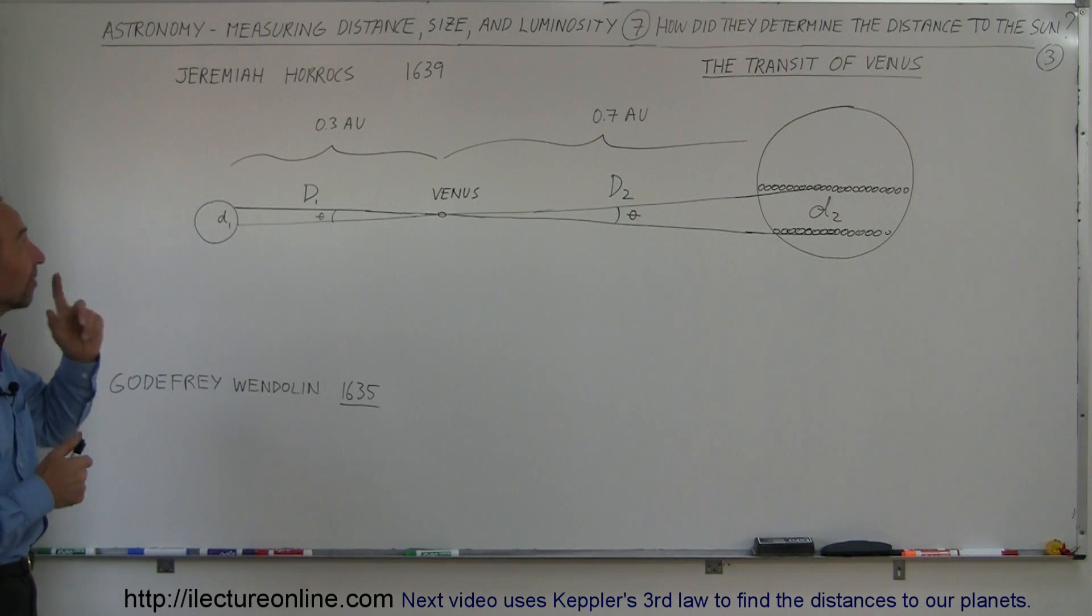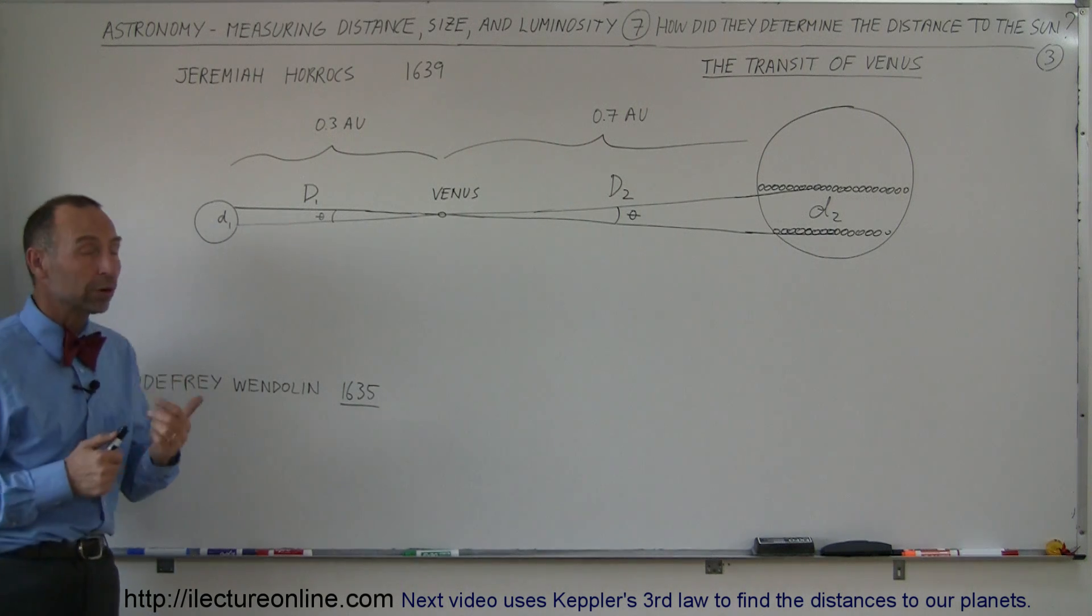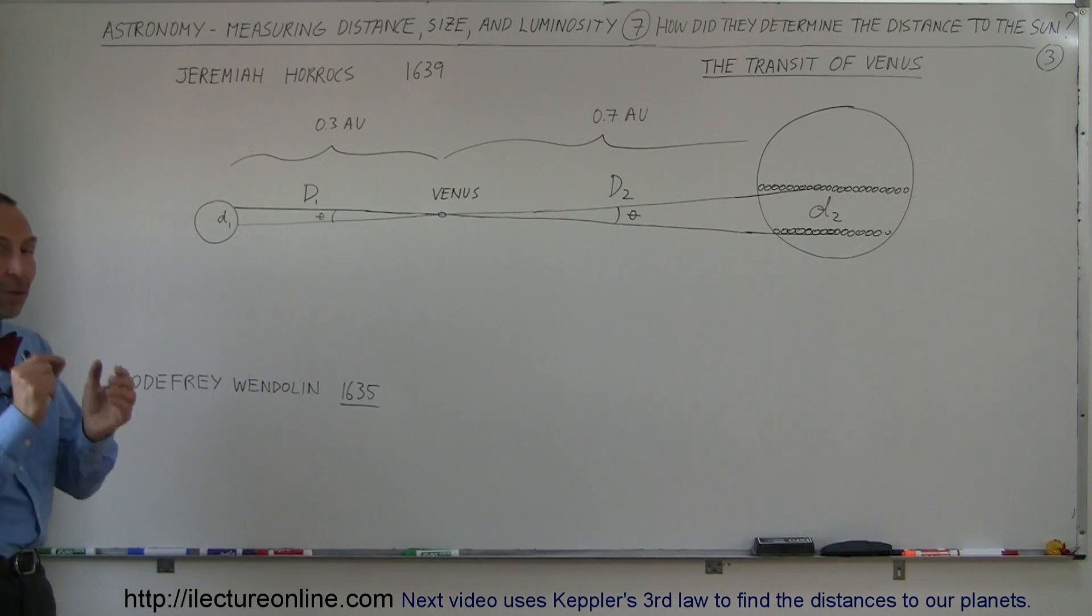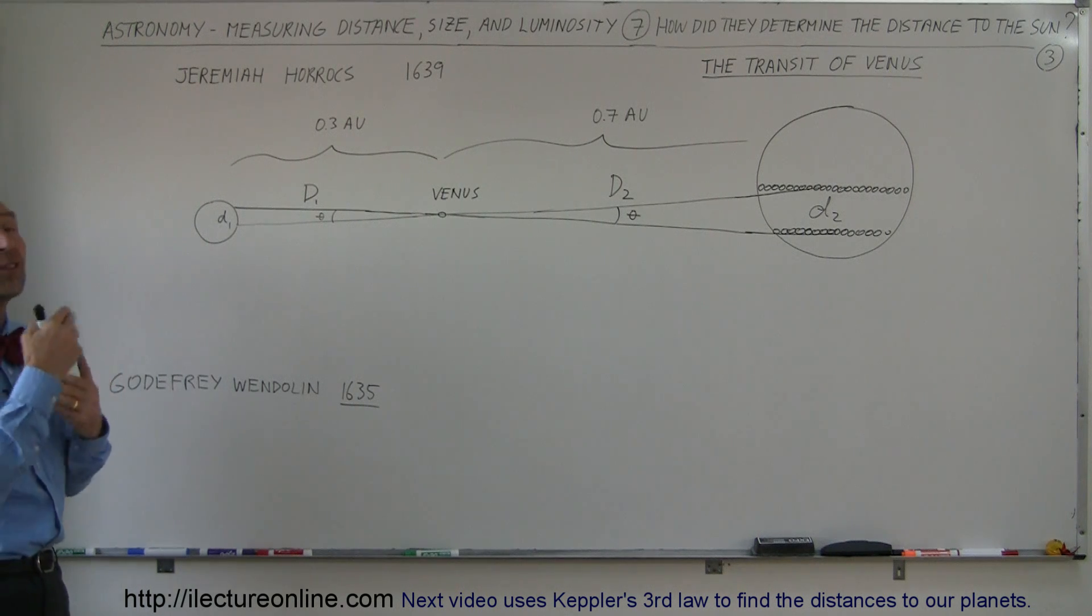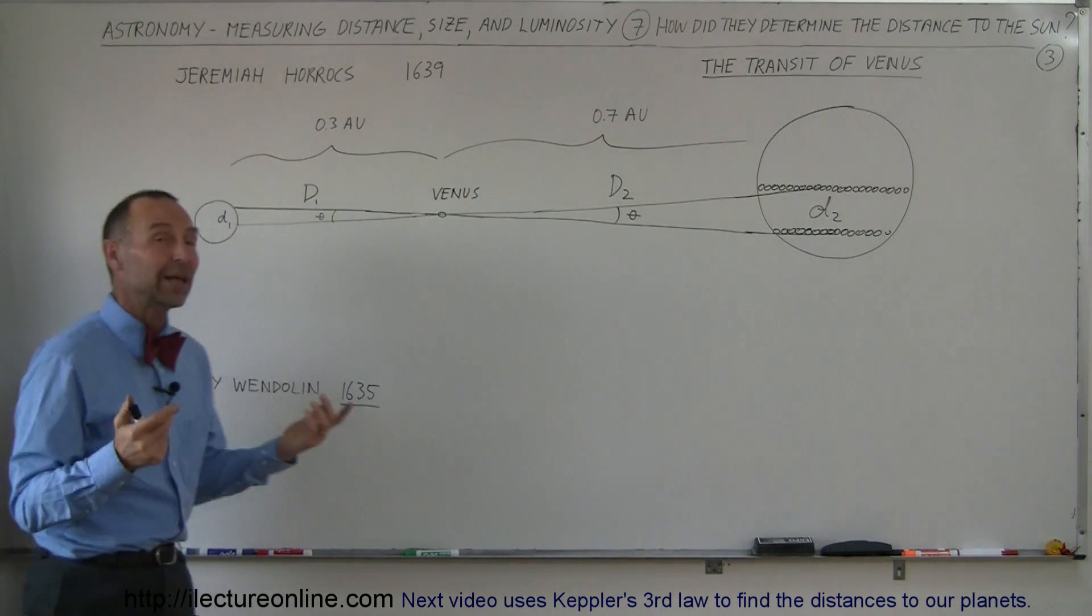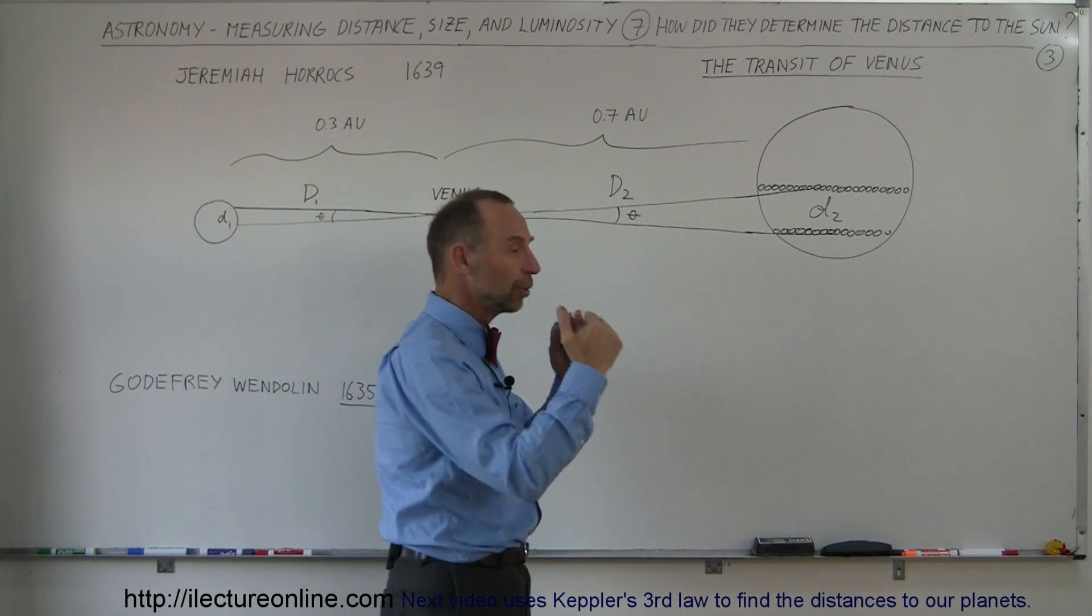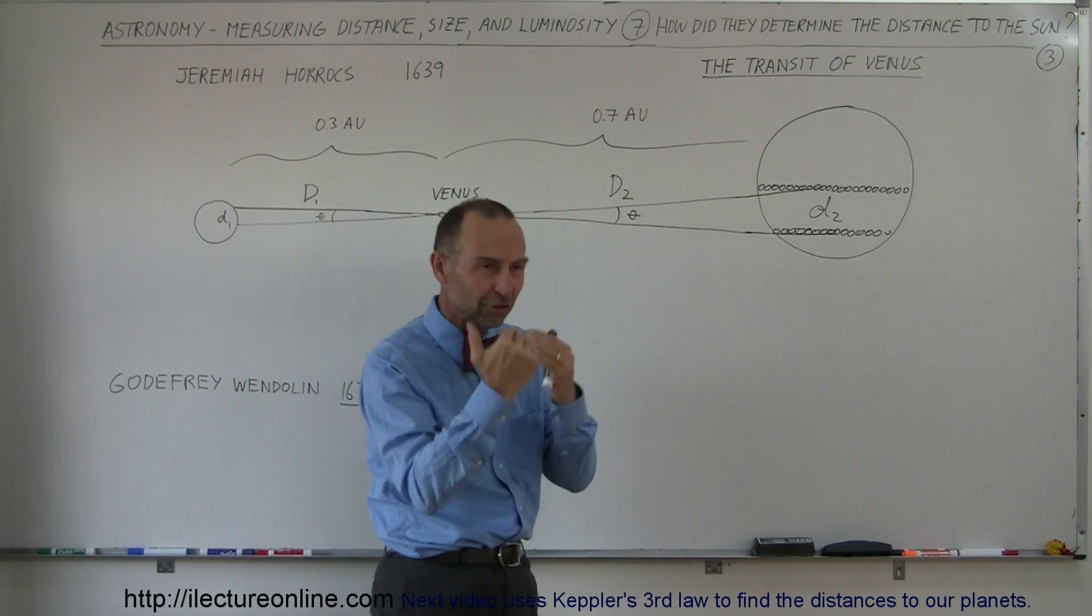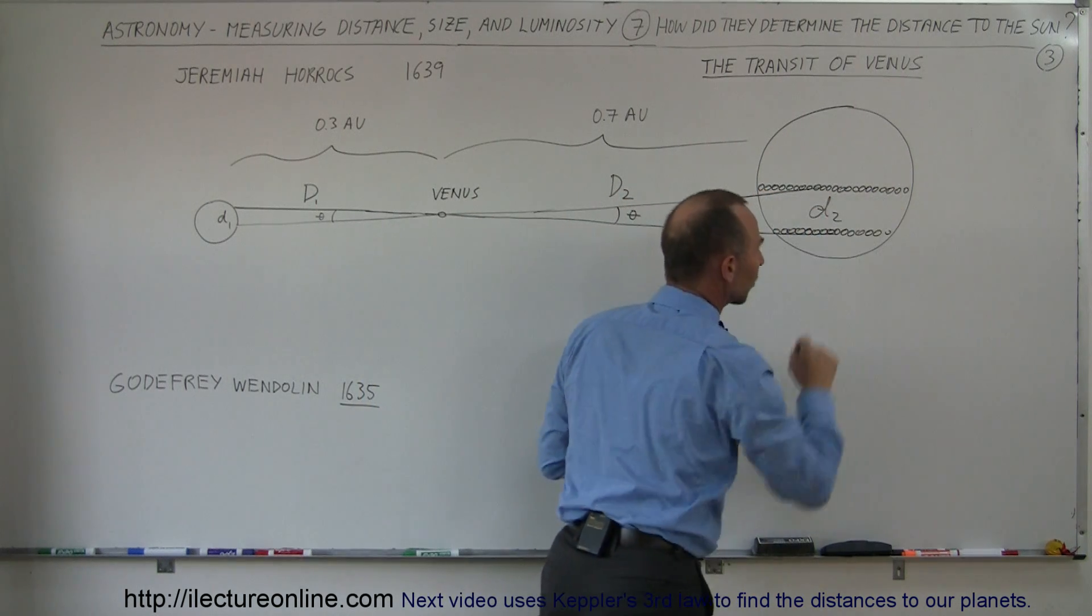But then back in 1639, an astronomer from England, Jeremiah Horrocks, figured out that by using the transit of Venus across the disk of the sun, he should be able to figure out the size of the sun or the distance to the sun. And so what that means is, of course, every once in a while when the moon and the sun and the Earth and Venus are just aligned in the right way, Venus will travel across the disk of the sun.